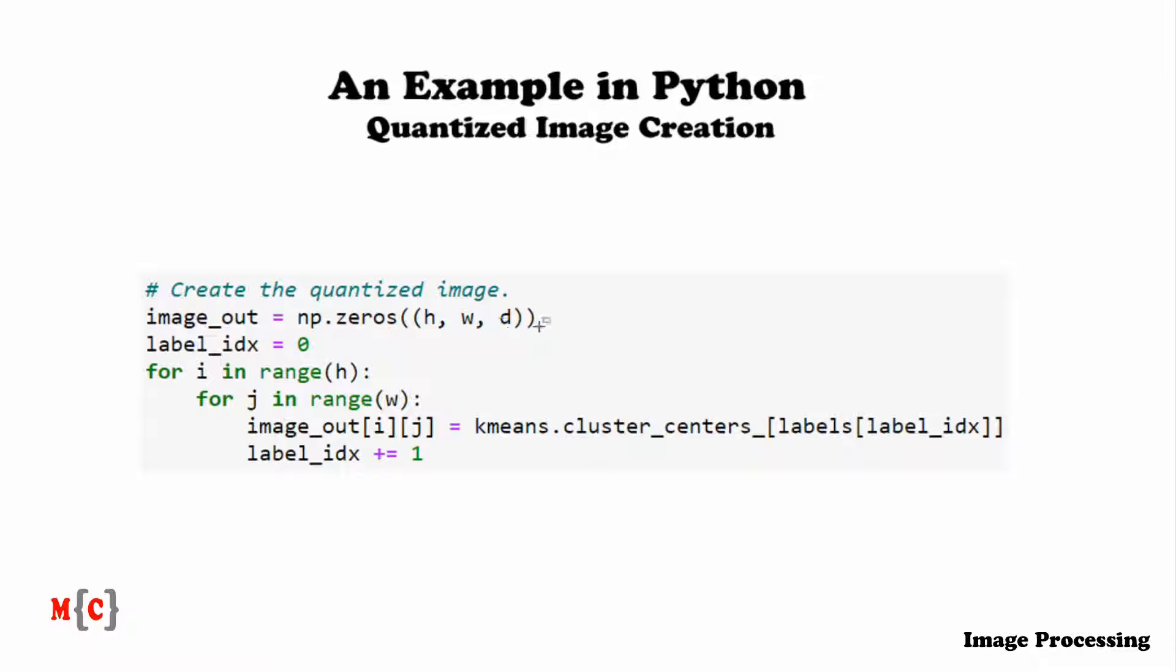And based on labels, we can build the quantized image. For this, we first initialize an image. And then we iterate over every pixel and assign its corresponding color that it should obtain. After this, we add image_out, which is the quantized image. Now let's plot this quantized image and also its histogram, as we have done before for the original image.